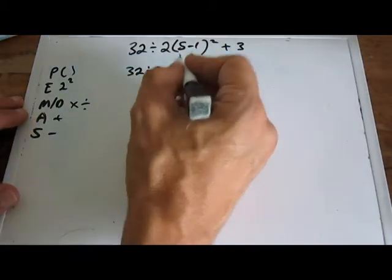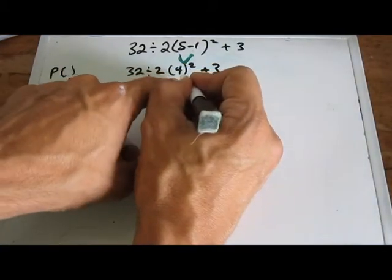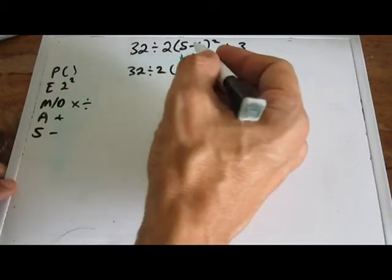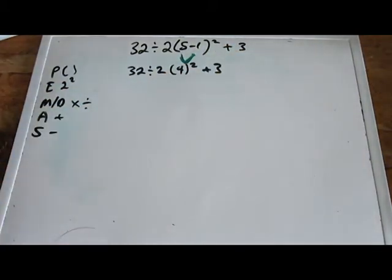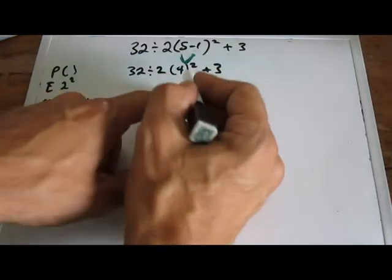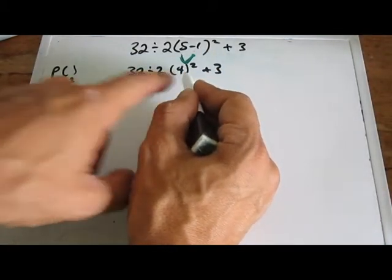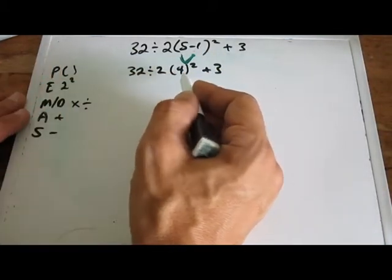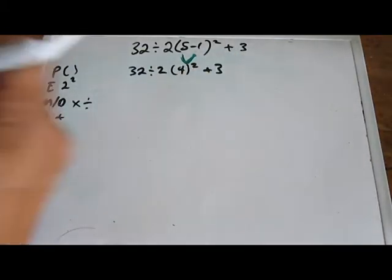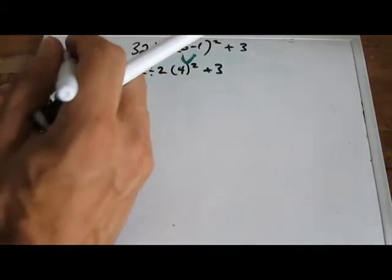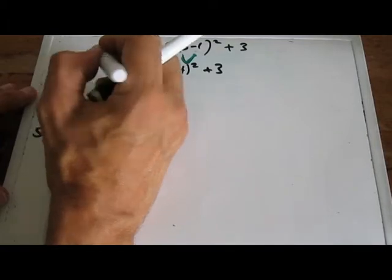Now, there still is a parentheses here, but there's nothing inside the parentheses for us to do. There's a 4. There's no addition, multiplication, division, subtraction. That's all we can do with that parentheses at this point, okay? We can't simplify that anymore. So we're going to cross off the parentheses here. Check that off. We've done that, right?